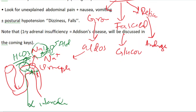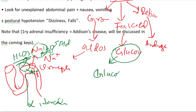Glucocorticoids are an emergency hormone. They upregulate receptors on the arterioles, increasing the effects of norepinephrine on the arteries, which causes hypertension. Glucocorticoids also promote gluconeogenesis, converting amino acids and lipids into glucose, which is needed in emergency situations.